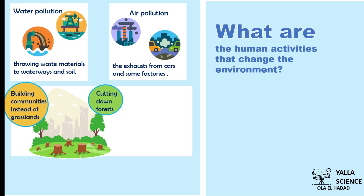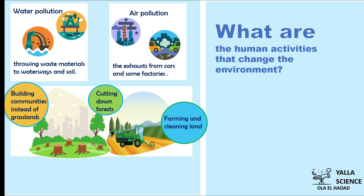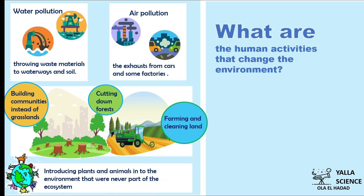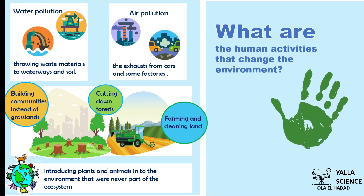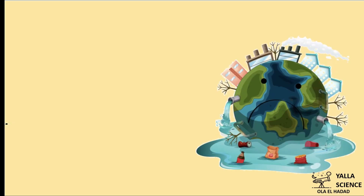Also, cutting down forests and replacing them with buildings, farming on grassland, and introducing plants and animals into environments where they were never part of the ecosystem. These activities have negative effects on humans, animals, and plants.